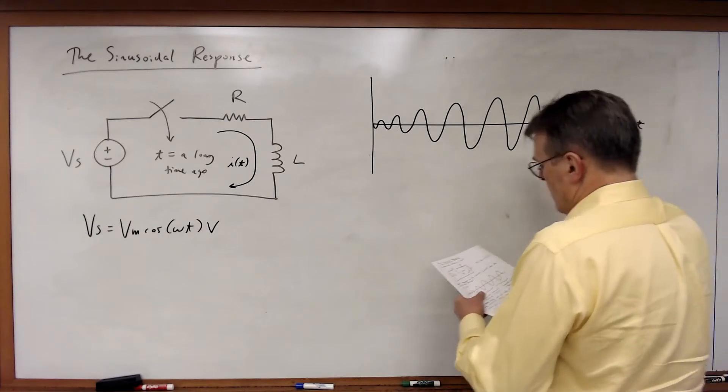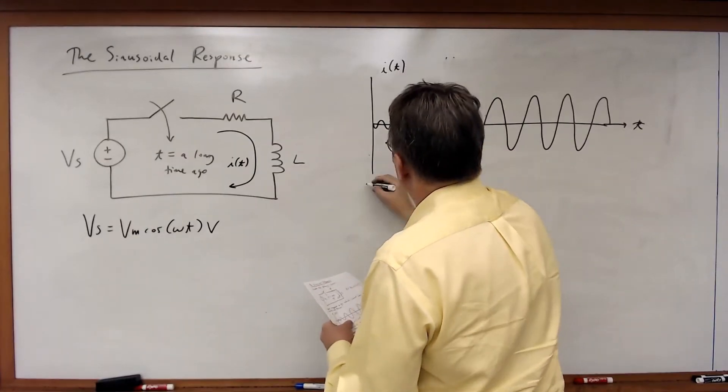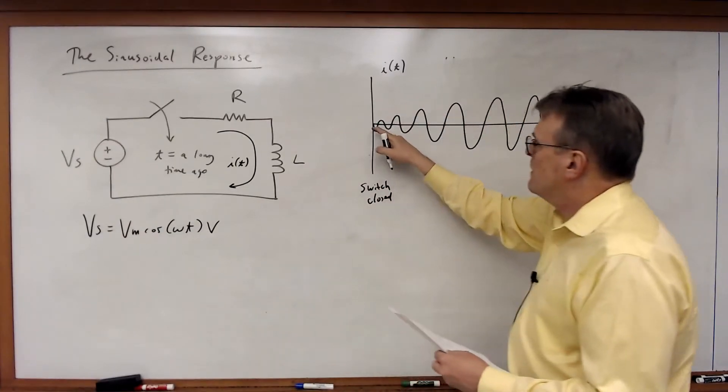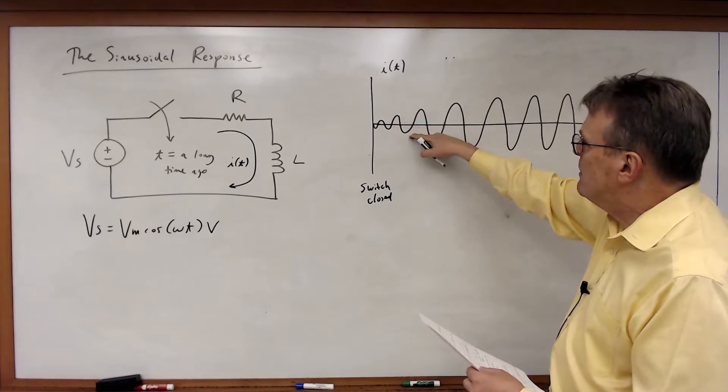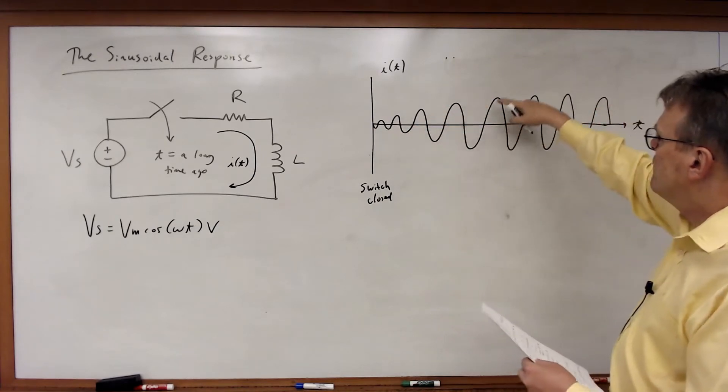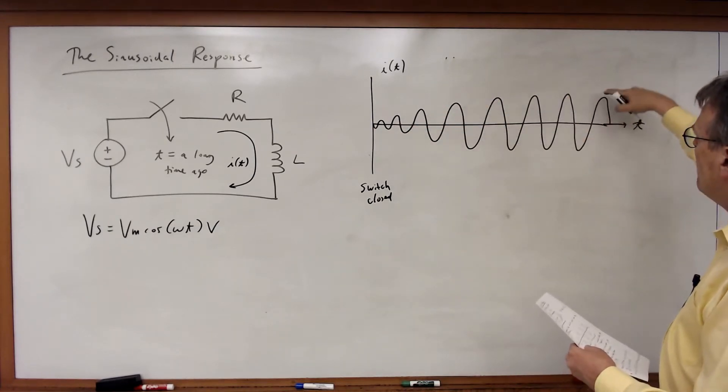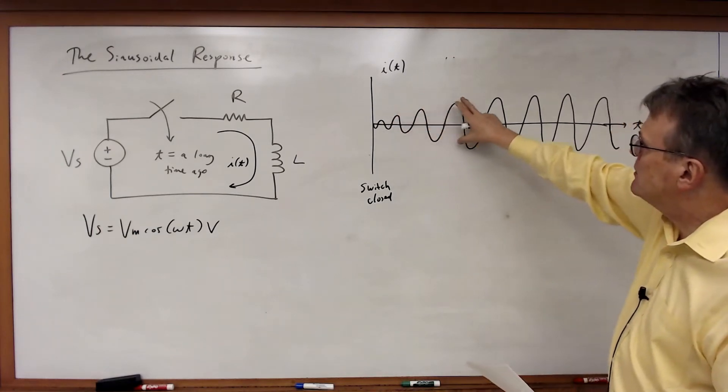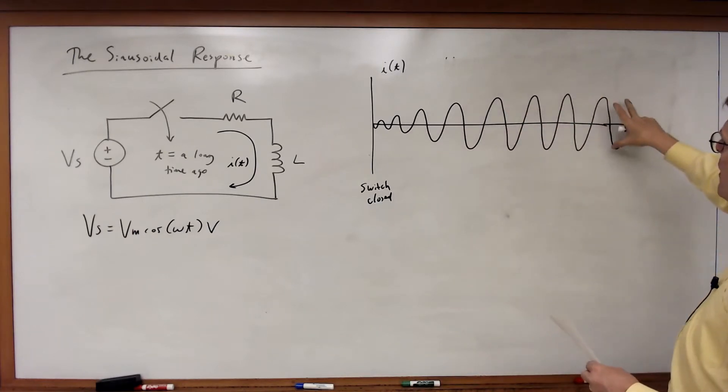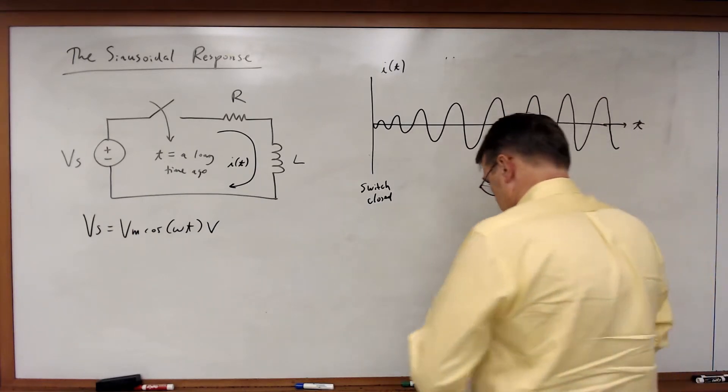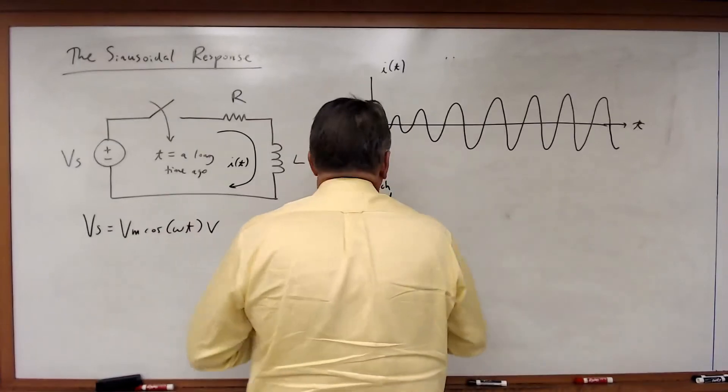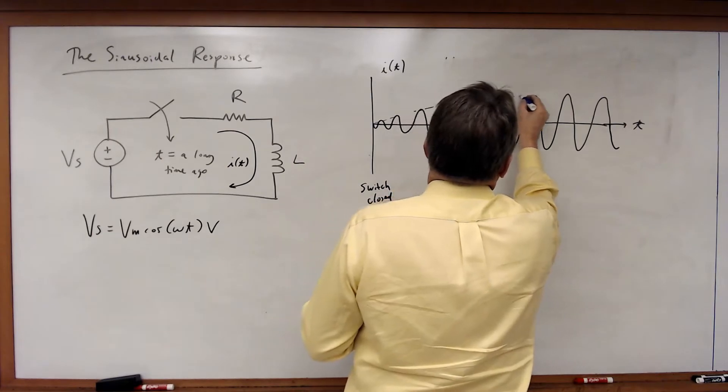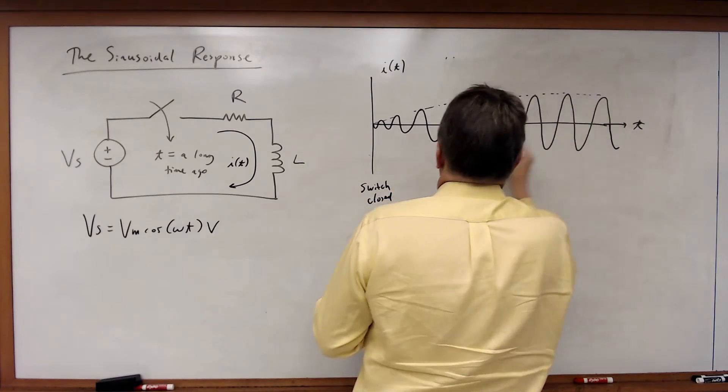If you had looked at the current back when the switch was closed, it would have started at zero and then it would have slowly built up until finally it had reached a value where every cycle looked exactly the same as the one before it. So it would ramp up in amplitude until finally we reached a point where the amplitude remained steady. So it would have this kind of behavior if we trace the amplitude.